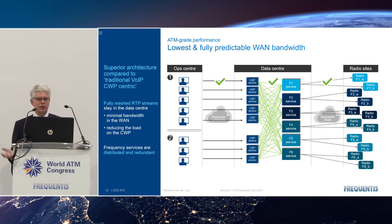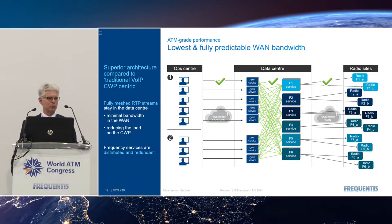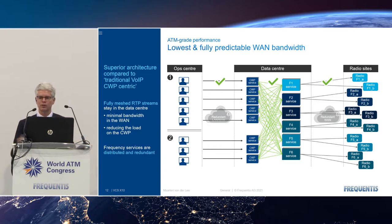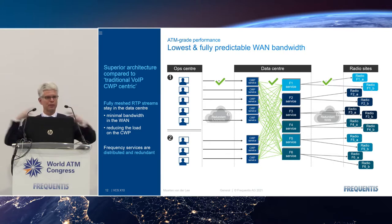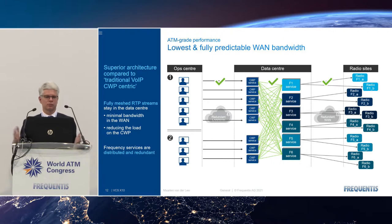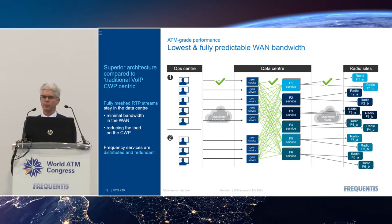The whole scalability of the system happens inside the data center where cheap computing power is available, so the system behaves in a super predictable and therefore reliable manner. Everything outside the data center stays the same — it just scales with the number of CWPs and the number of radios. The whole load model remains within the data center.